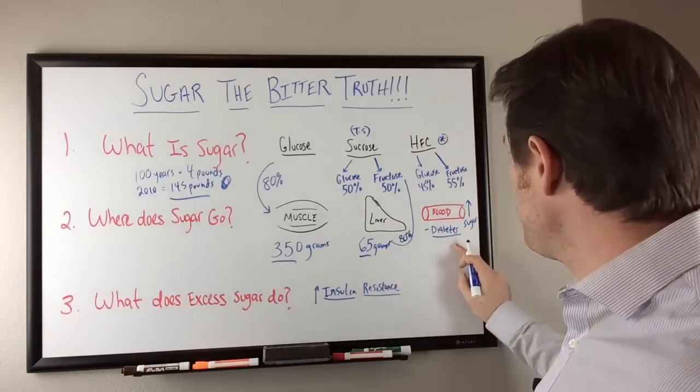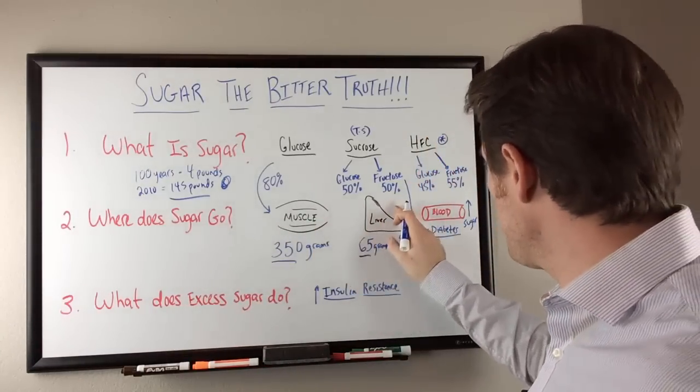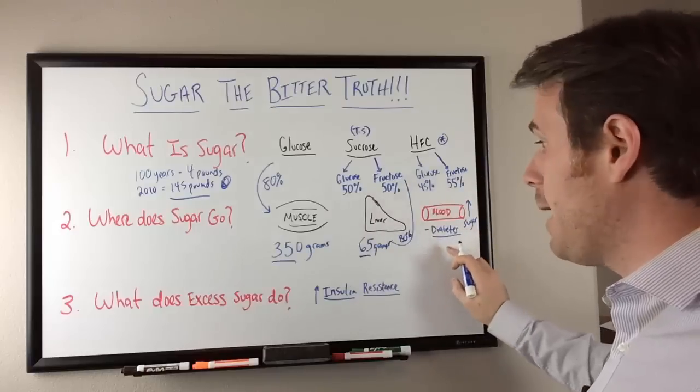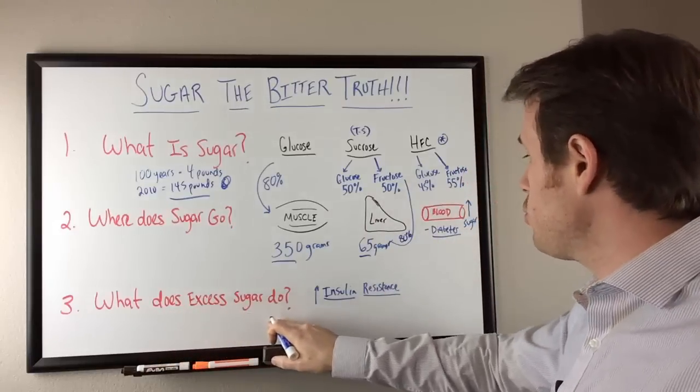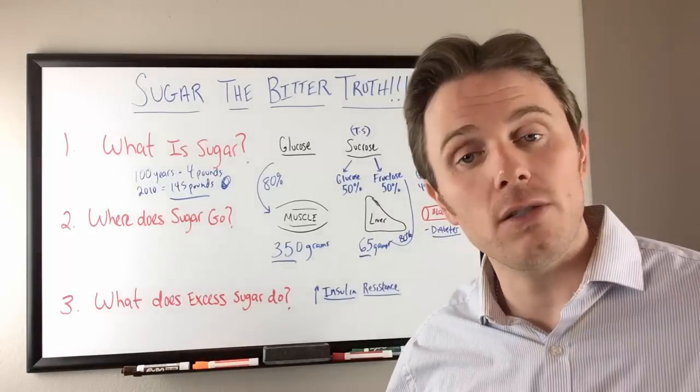But again, you can see here, muscle gets tapped out, liver gets tapped out. It all goes to the blood. We see diabetes. So what does excess sugar do? We talked about the insulin resistance.